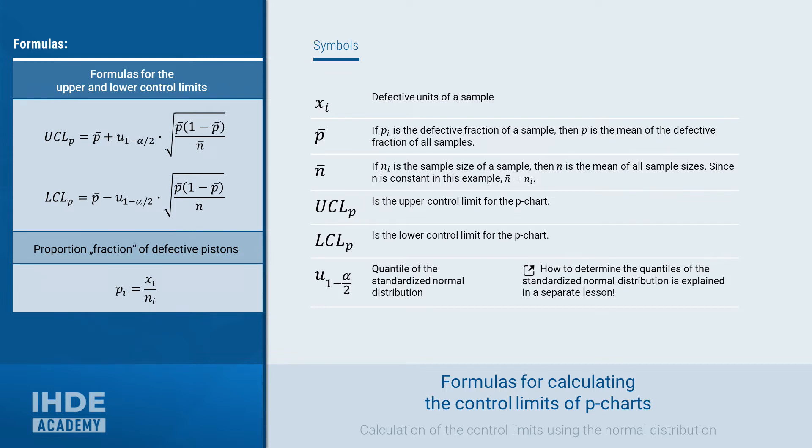n bar is the mean of the sample sizes. Since n is 500, n is the same for all samples, n bar is also 500. As already mentioned, the LCL and UCL are the lower and upper control limits for the fractions of non-conforming units. u for 1-alpha half is the quantile of the standard normal distribution. Since this training is aimed at advanced users, it is assumed at this point that you have the basic knowledge of the standard normal distribution and what is meant by the quantiles and how they are calculated. If not, you may want to check out the available lessons for this first.